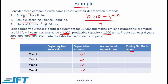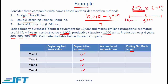For the double declining balance method, we depreciate at two times the straight-line rate. The straight-line rate is 25%, so the double declining rate is 50%. The key difference is that we apply this rate to the book value at the start of each period. With a starting book value of 10,000, year one depreciation is 50% of 10,000, which is 5,000, leaving a book value of 5,000. We continue until the book value reaches 1,000 — the residual value — which we are not allowed to go below.